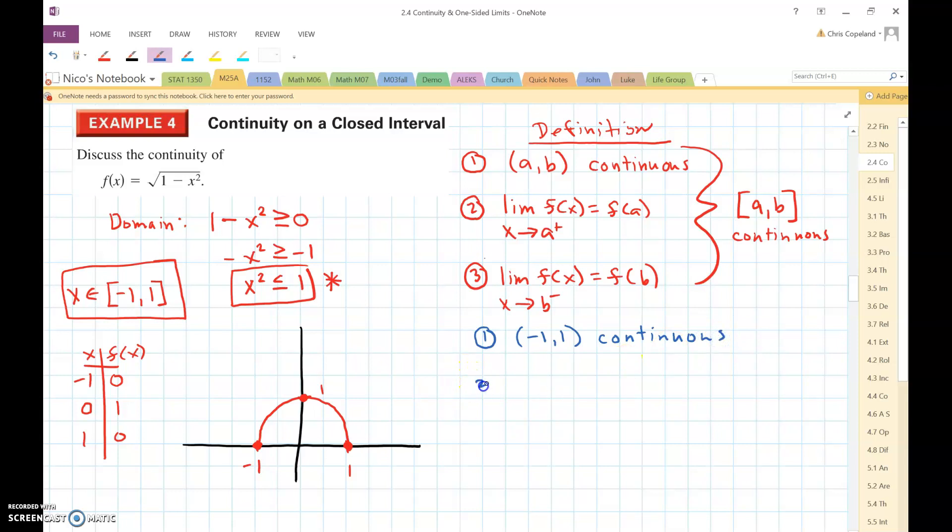Okay, condition two, we want to take the limit of this function, which is f of x, as x approaches a, this would be a, negative one coming from the right. So that's going to be zero, which would be f of x. So that's good.